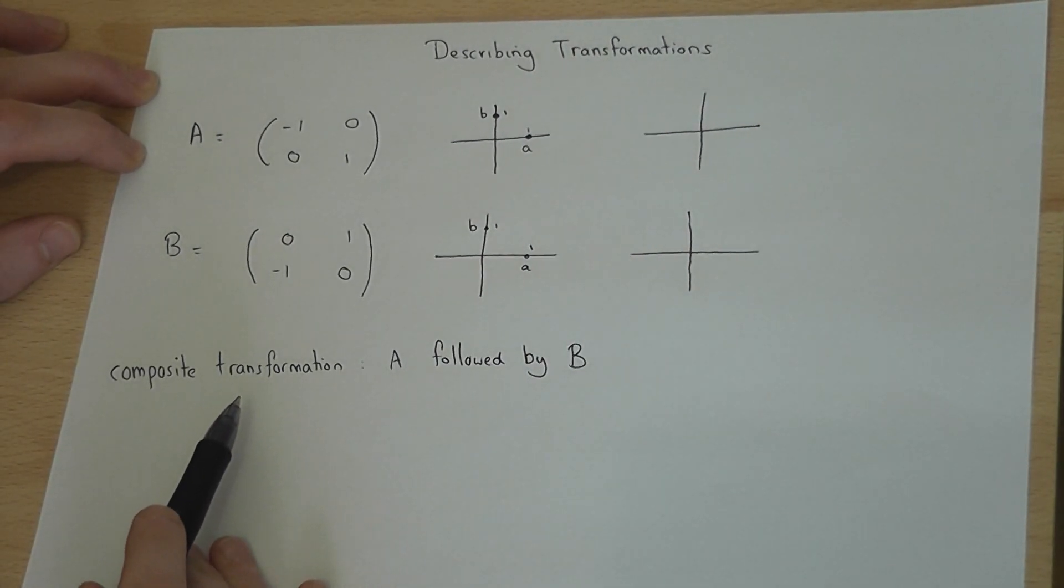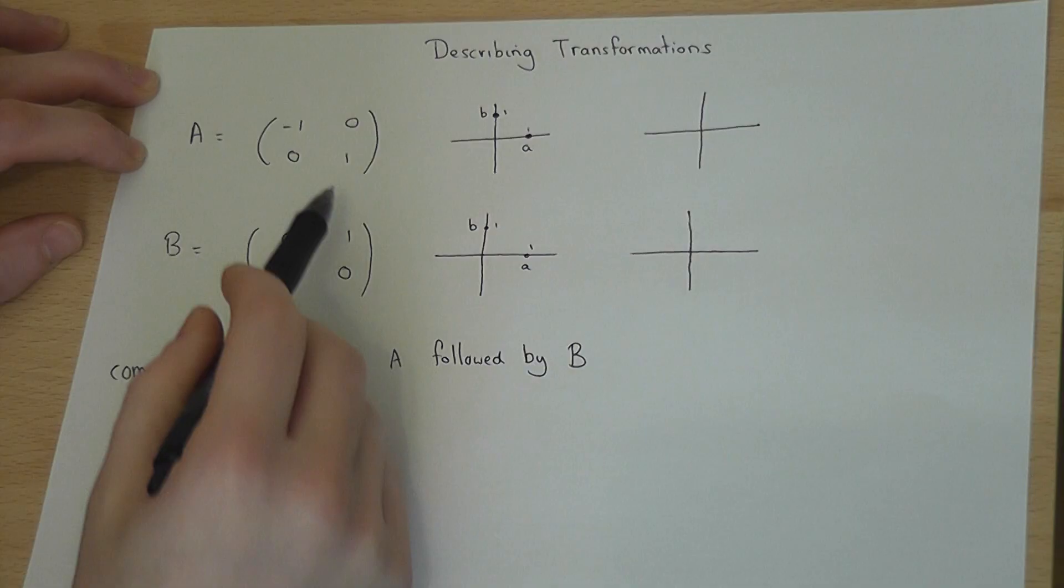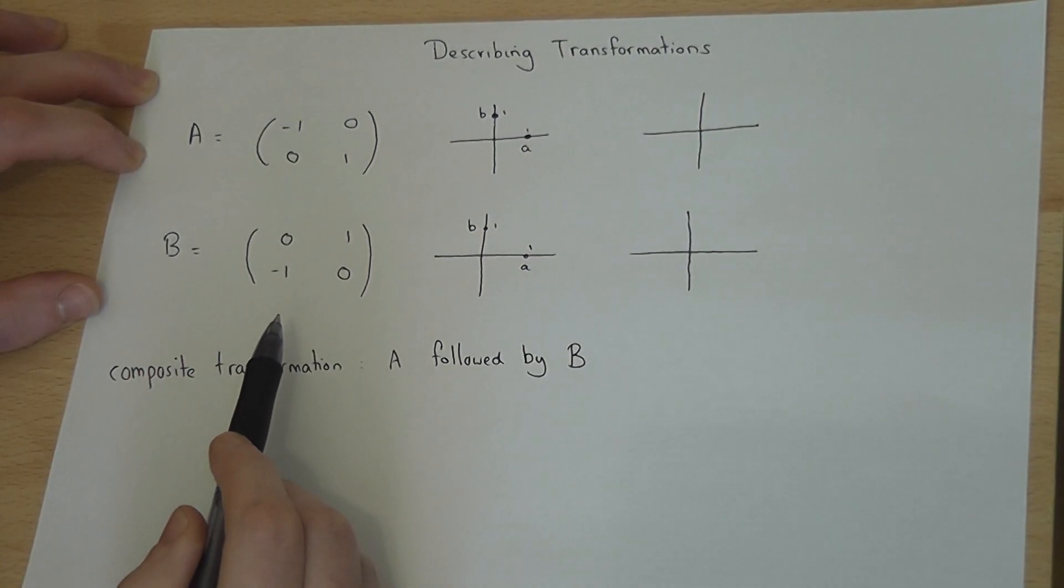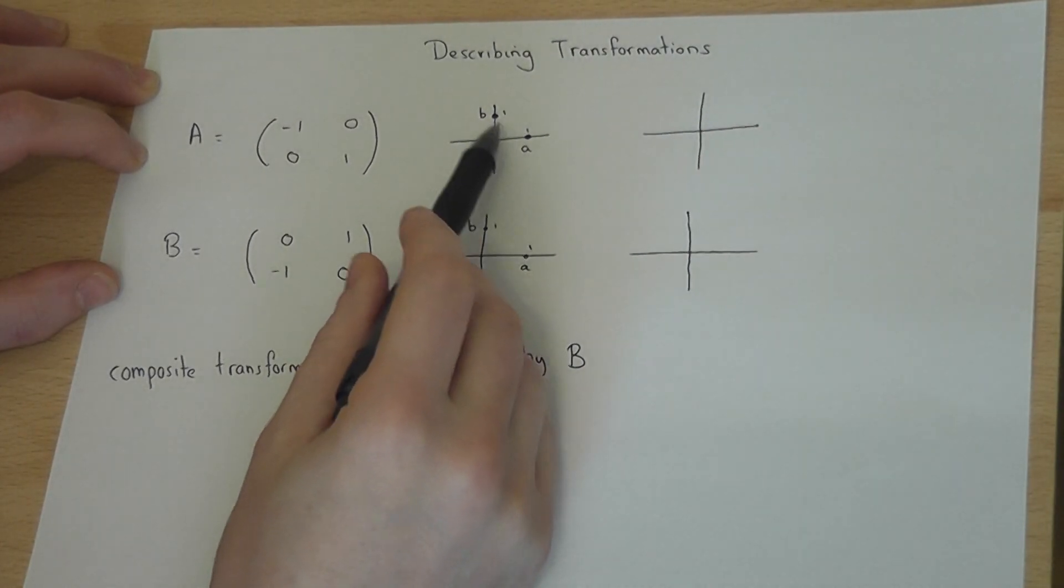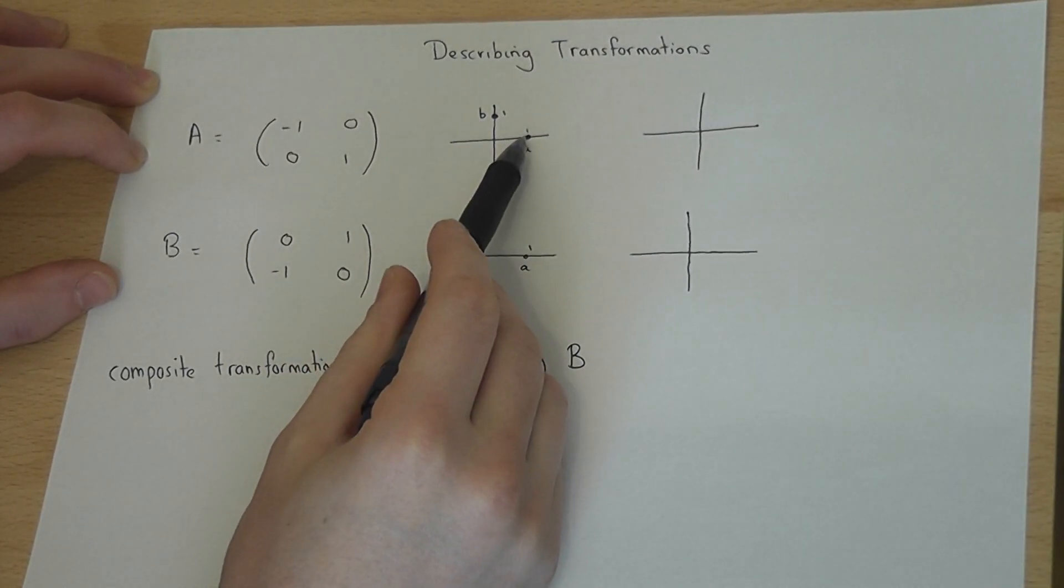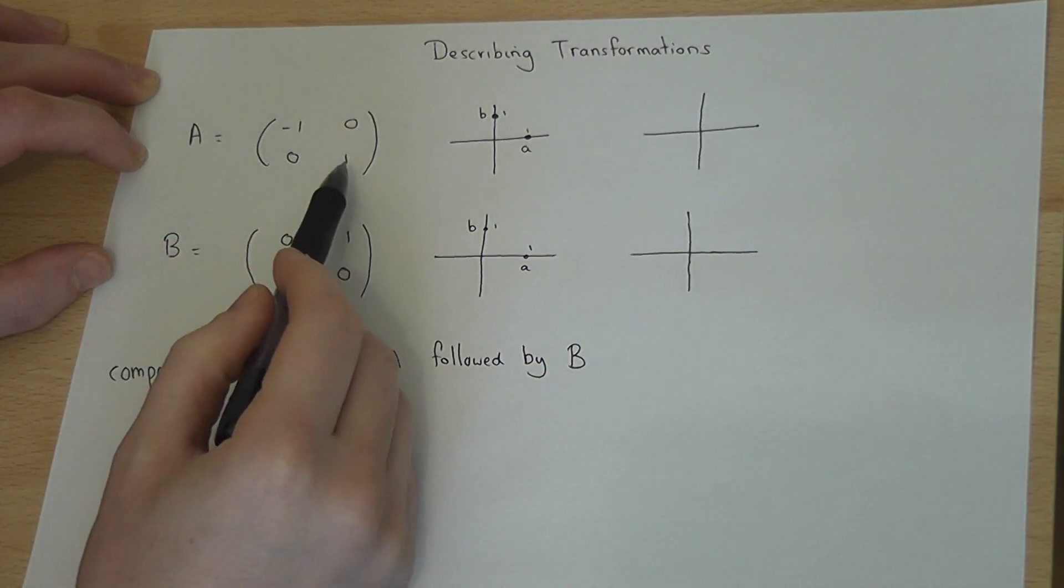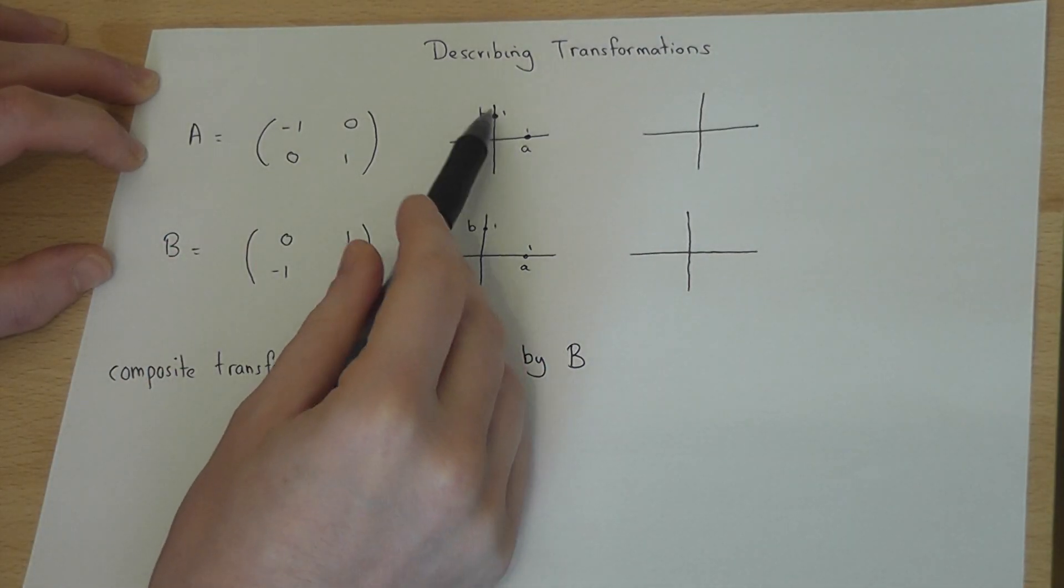This video looks at how we can use matrices to describe transformations. If we consider the two coordinates A and B, where A is 1, 0 and B is 0, 1, a matrix shows what happens to these two coordinates.